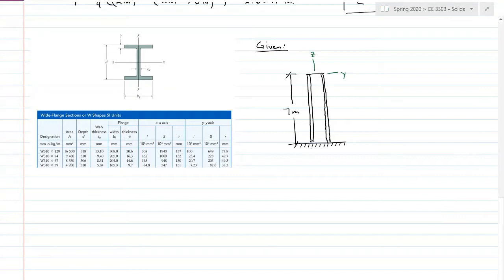Now I know that this column wants to bend about its y-axis. How do I know that? Because if I look at all these y-values, they are much, much, much smaller than my x-values, which means those are the weaker axes.